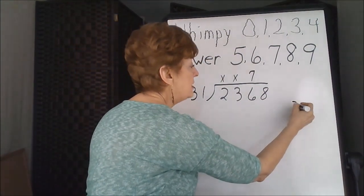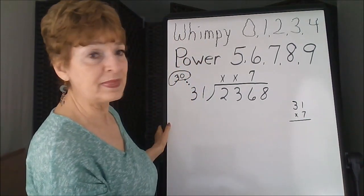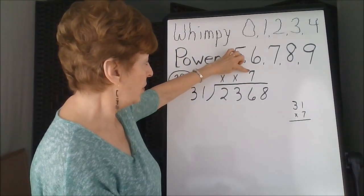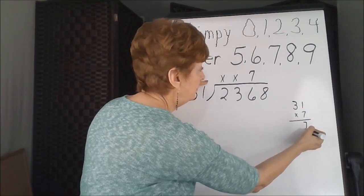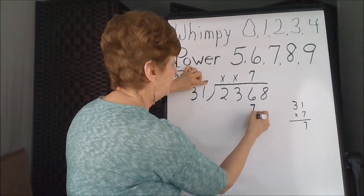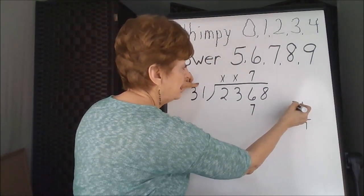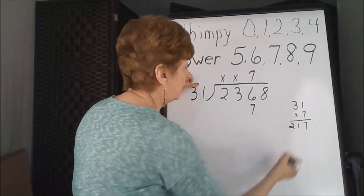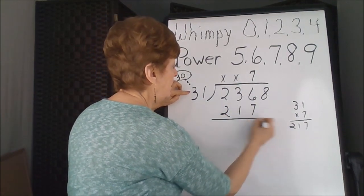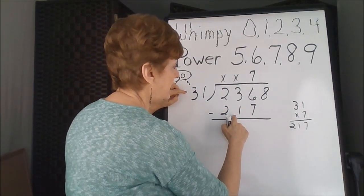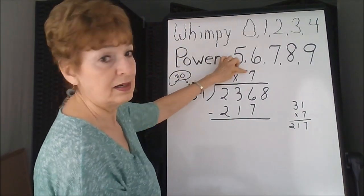7 times 3, what you're really doing is 31 times 7, if you need to do the problem on the side, but this is a distribution. We go 7 times the 1's column is 7. 7 times the 10's column is 21. That's how I got this answer, I did my multiplication sideways.